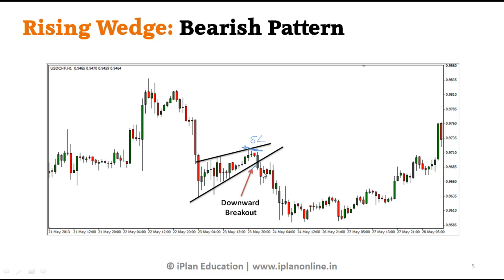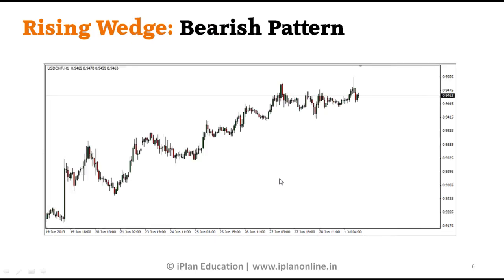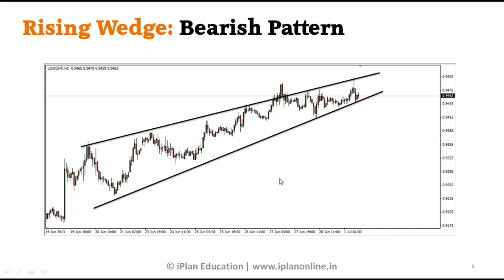The best approach is to let the intersecting candle — the candle that intersects this slope — fully form, and then take an entry position at the next candle. Let's see another example of a rising wedge bearish pattern. Here again we connect the higher lows and higher highs, wait for the breakout, and the stop loss will be above this level.